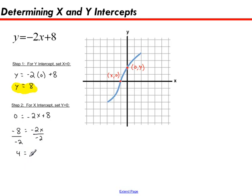Or I like to flip that so my variable's on the left hand side, it just makes it a little bit easier to write. And I'm going to say x equals 4. And there is my x intercept.